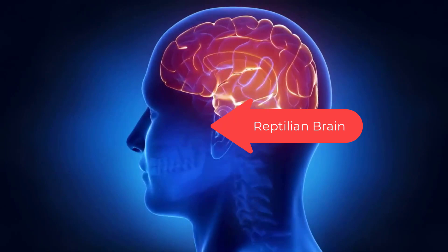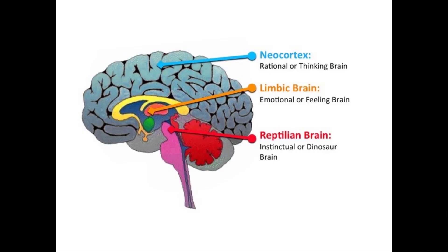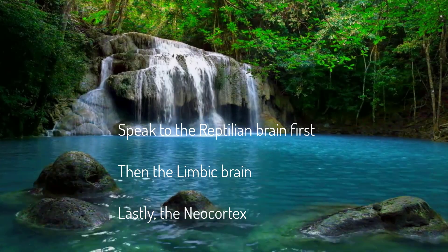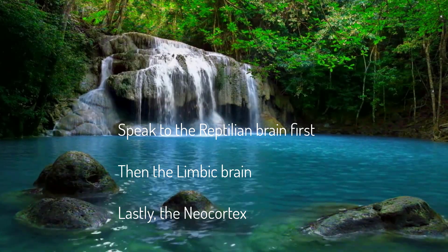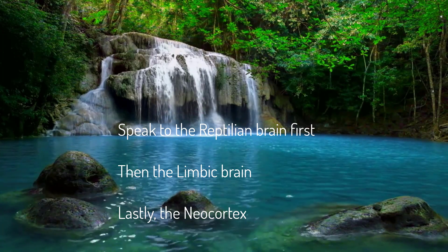The reptilian brain can take input from the other brains, but it can also decide faster than the blink of an eye, then use the other brains to justify the decision. The reptilian brain is visual and hardwired into the brain stem. It can make survival decisions before you or the other brains can even begin to process the data.